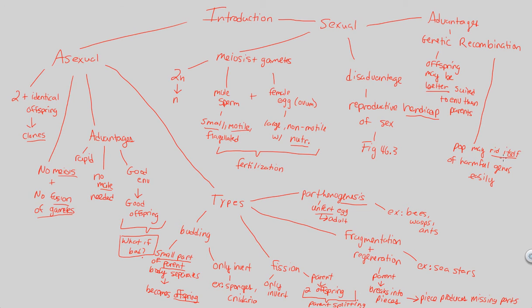Take a look at the sexual reproduction side. The population may rid itself of harmful genes more easily. That's because you may have some sort of genetic recombination event where the mutation is masked. You may have a masking of dominant versus recessive.